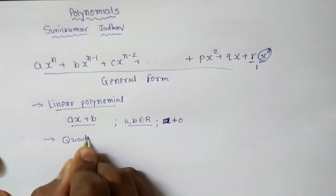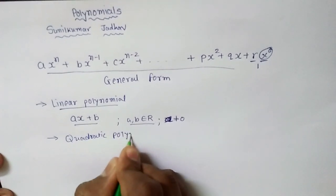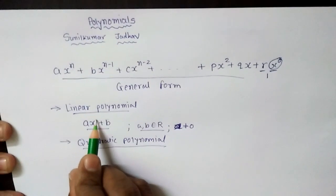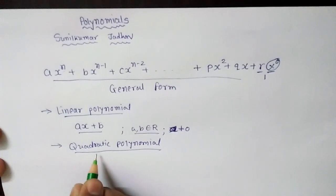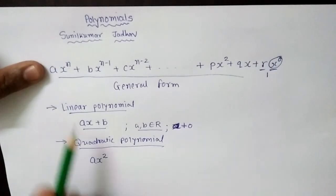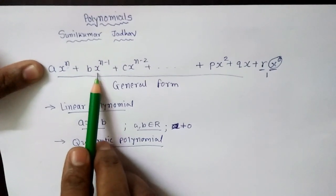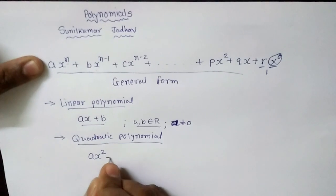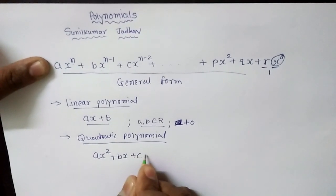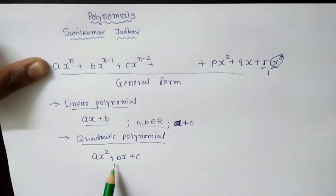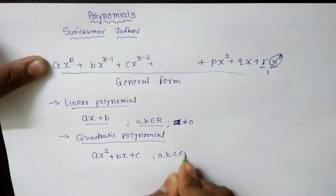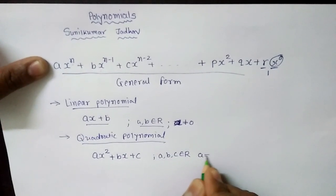The next type is the quadratic polynomial. Here, the power — or degree — of x is 2. Following the general form with n equal to 2: the first term is a into x raise to 2, the next term is b into x raise to 1, which is simply bx, and the last term is c into x raise to 0, which is c. So the standard form of a quadratic polynomial is ax squared plus bx plus c, where a, b, c all belong to R and a is not equal to 0.